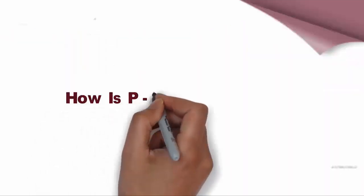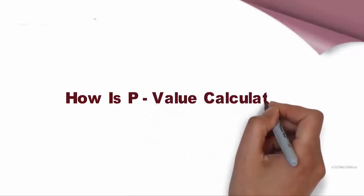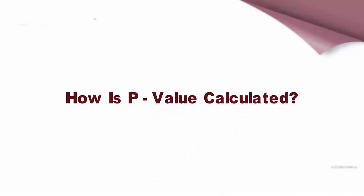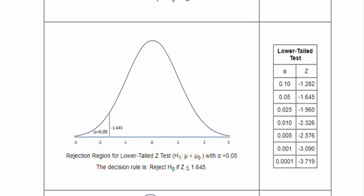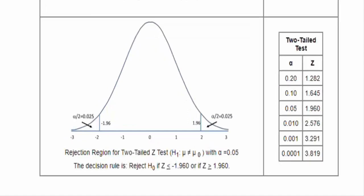How is P-value calculated? The calculation for a P-value varies based on the type of test performed. The three test types describe the location on the probability distribution curve: lower-tailed test, upper-tailed test, or two-sided test.